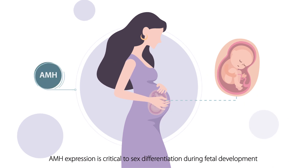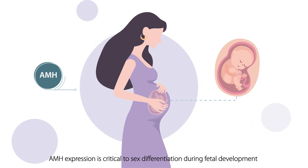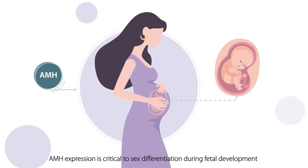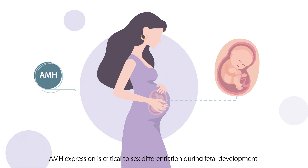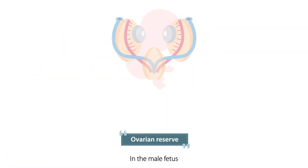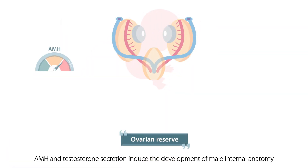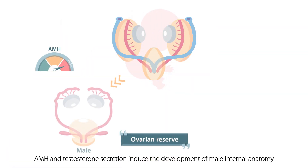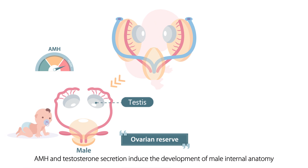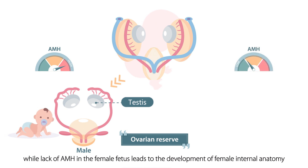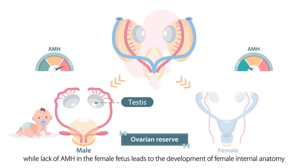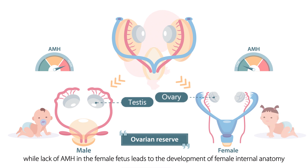AMH expression is critical to sex differentiation during fetal development. In the male fetus, AMH and testosterone secretion induce the development of male internal anatomy, while lack of AMH in the female fetus leads to the development of female internal anatomy.